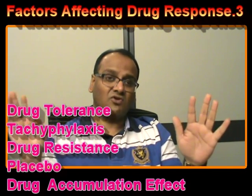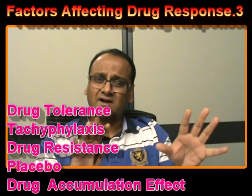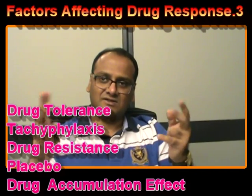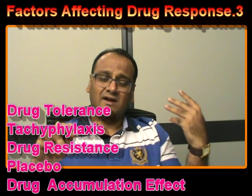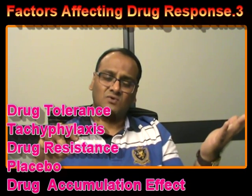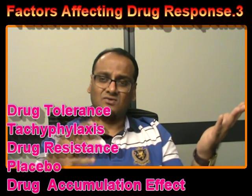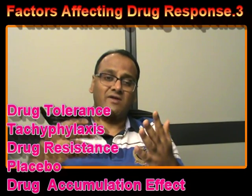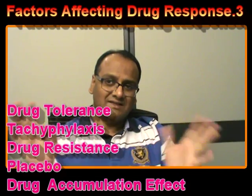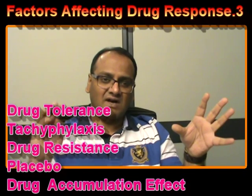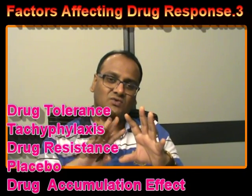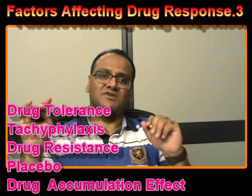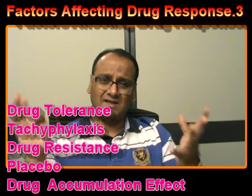Tolerance can also be viewed from another angle — cross tolerance. Cross tolerance occurs between two drugs with similar mechanisms of action. For example, alcohol is both a pleasure drug and, in large doses, a CNS depressant. People who take alcohol long-term may become tolerant to the similar depressant actions of other drugs like barbiturates and benzodiazepines. So tolerance to one drug extends to another drug with the same kind of action.